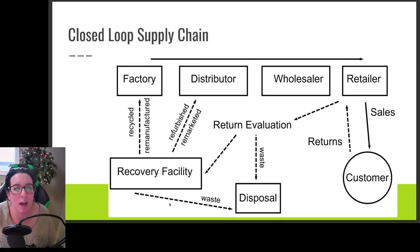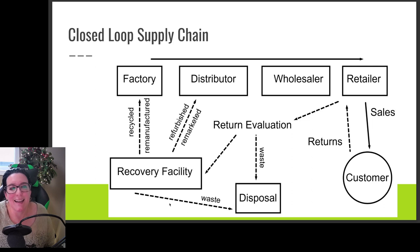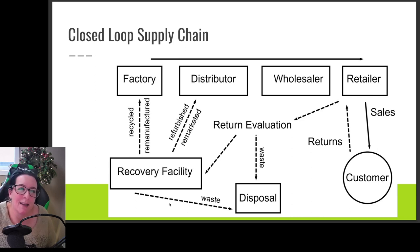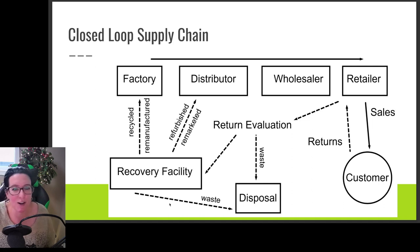So how a closed loop supply chain works: we have the standard forward logistics — factory, distributor, wholesaler, retailer, and we sell to the customer. If the customer returns an item to the retailer, such as returning a TV to Best Buy, Best Buy then needs a way to evaluate the return. Is it broken? Does it just go into waste and get disposed of? Or can it go to a recovery facility where it is refurbished — they fix the broken parts of the TV — and then it goes back to be sold through a distributor, wholesaler, and retailer.